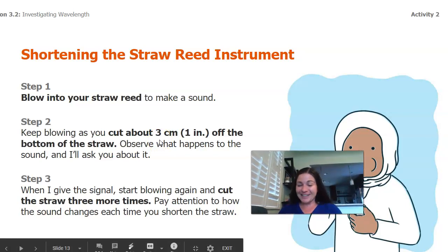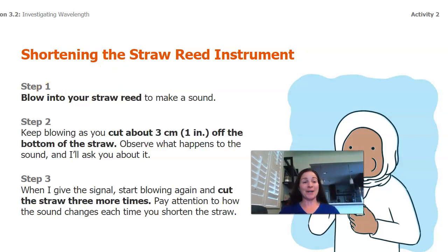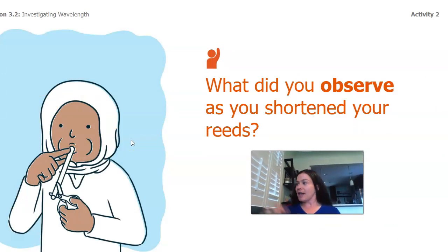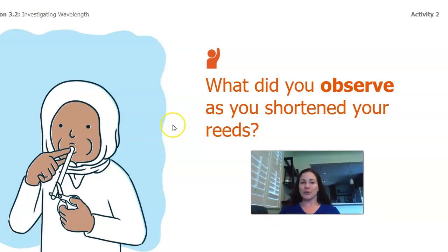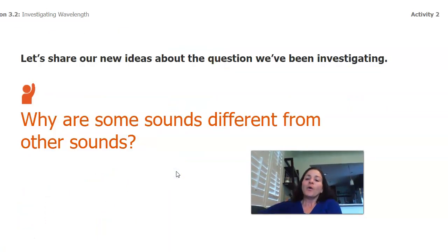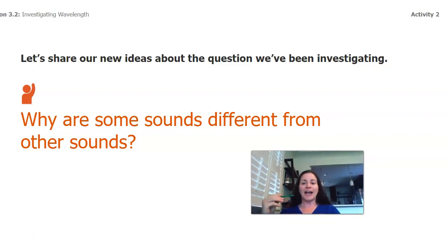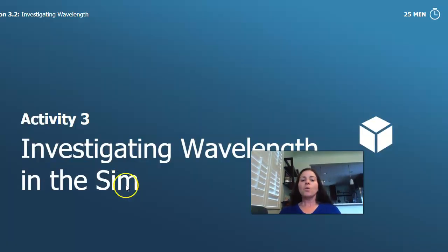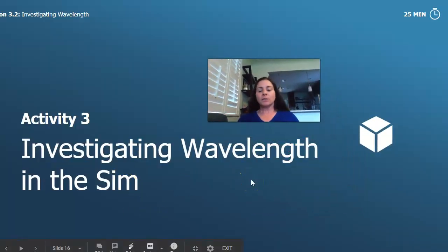Oh man, that is hard to do! So you probably noticed something happening to my instrument as I was playing it. What did you observe? This is called a reed. What did you observe as it got shorter and shorter? I noticed this sound was already pretty high-pitched — it had a very "yeeee" sound from the beginning and it seemed to get higher and higher every time I cut it. So that makes me wonder: why are some sounds different from other sounds? We know about amplitude — how big or loud a wave is. So what else?